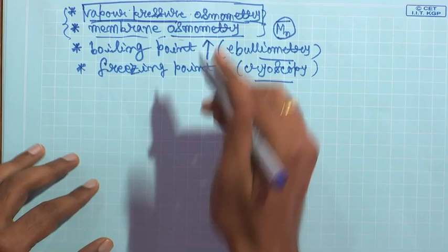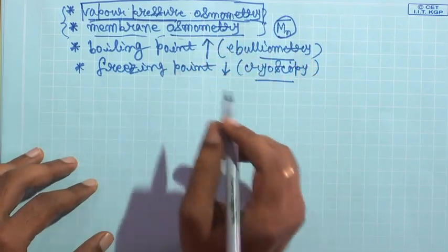What happens when you have a solution of a polymer? Say you have a dilute solution of a polymer at a particular temperature. If you just have the solvent, it has a particular vapour pressure because some molecules go from the solvent phase to the vapour phase and some come back. Now, if we dissolve a solute — in this case a polymer — into that solvent, there is a lowering of vapour pressure of that solvent in that solution.